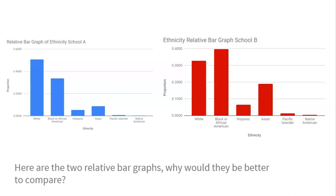That's it for Topic 1.4. It's really just about being able to look at the different ways to display a categorical variable and talk about what you see. See you in the next video.